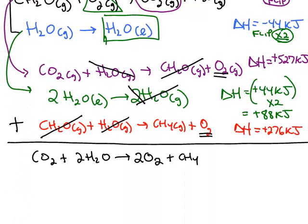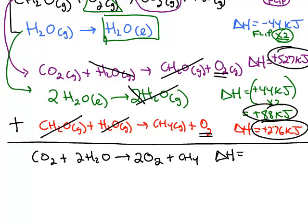Which means we did our steps correctly, so now all we have to do is add together the three modified steps to give us delta H for the overall reaction. And if you add these three steps together, delta H works out to be 891 kilojoules.